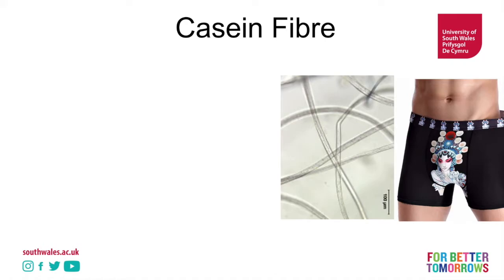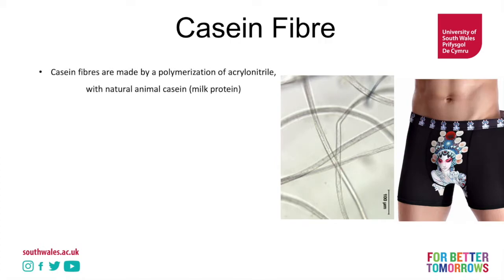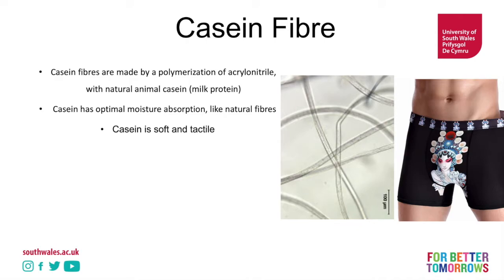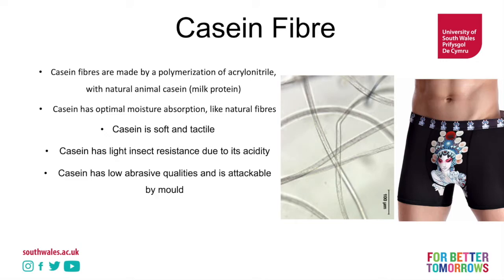Let's take a look at casein fiber. The example shown here is a pair of boxer shorts — casein is often knit into jersey-style fabrics and used for clothing like underwear. Under the microscope it looks very much like hair. Casein fibers are made from the polymerization of acrylonitrile with animal casein — that is, milk protein. It has optimal moisture absorption like natural fibers, is soft and tactile — making it perfect for underwear — and has a light insect resistance due to its acidity, making it suitable for areas prone to microbial issues.